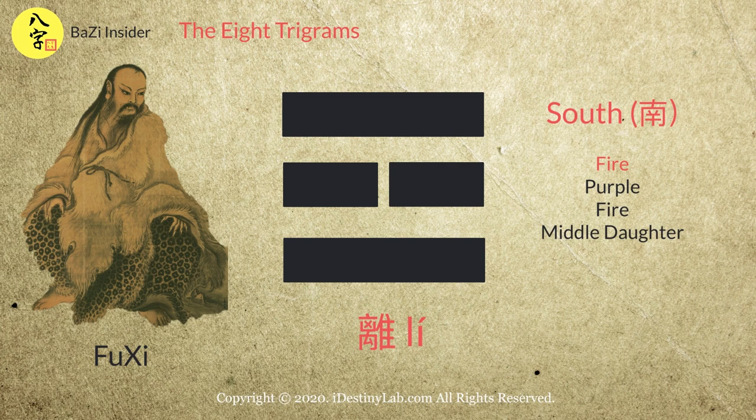Li Gua represents the south direction. It also represents fire, purple colour, and the middle daughter. Its 5 elements is fire.